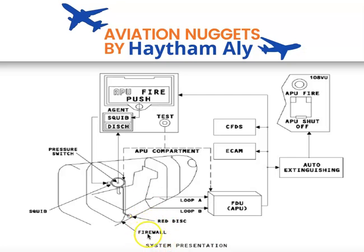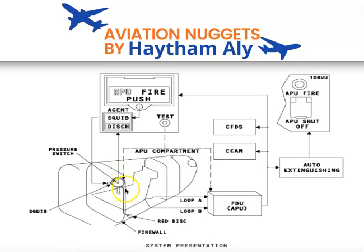As you can see here, we have a firewall — the APU compartment is a fireproof compartment protected by a firewall, so that if an APU fire happens on the ground, the aircraft structure will not be affected. As a pilot or aircraft maintenance personnel, during your walk-around before departure, you need to check for the red disc on the fuselage. If the red disc is missing, the fire bottle has been over-pressurized and the halon gas has been released — meaning the fire bottle may be empty.